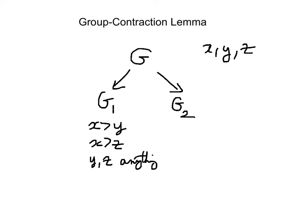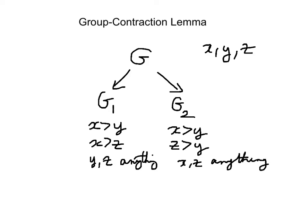For the members of G2, we have everyone preferring X to Y and Z to Y, but the pair X and Z is undecided — we don't know anything about the individual preferences there. Now let's consider the social ranking between X and Z. If X is preferred to Z, then G1 is decisive, because every member in G1 prefers X over Z.